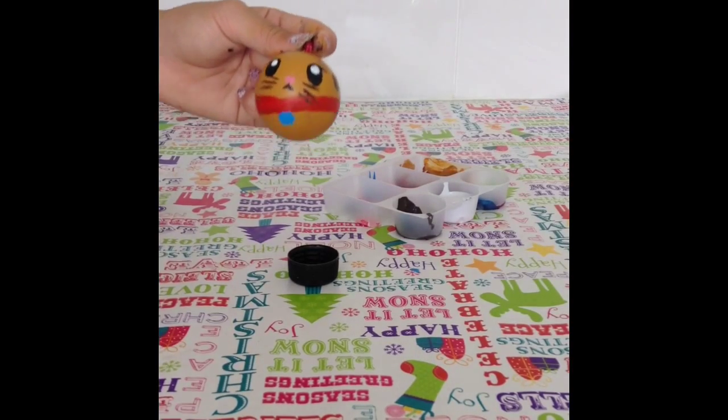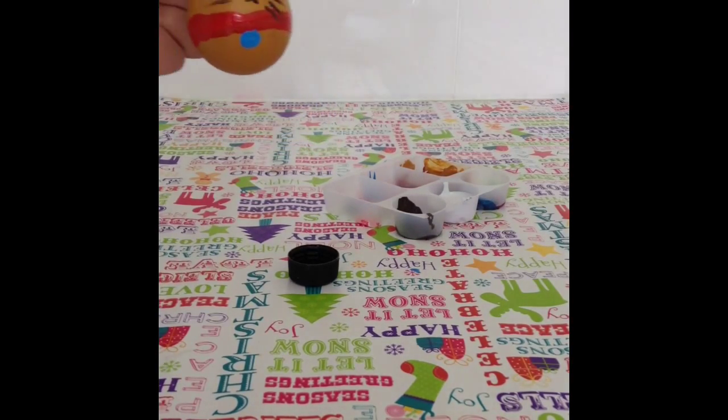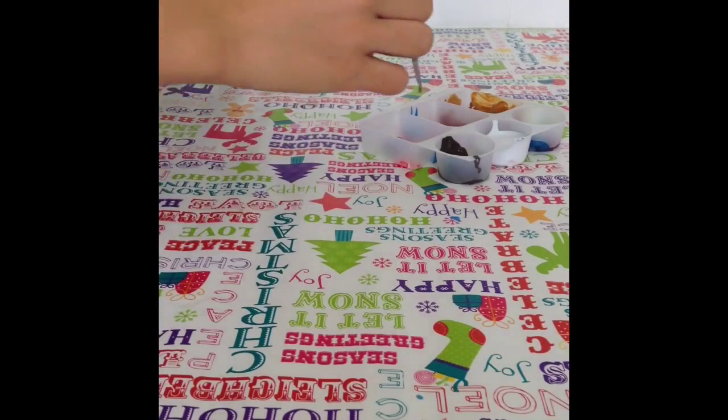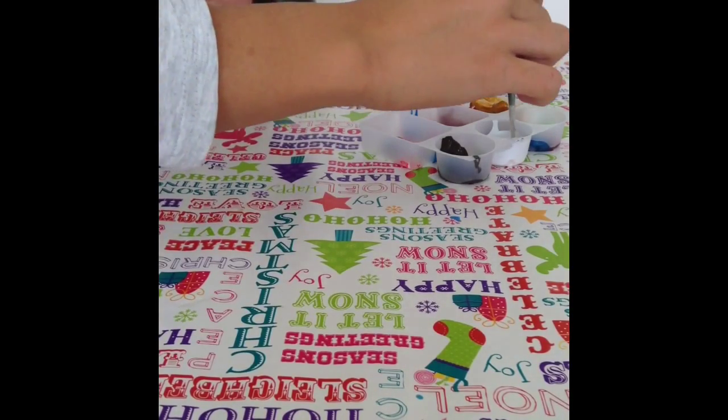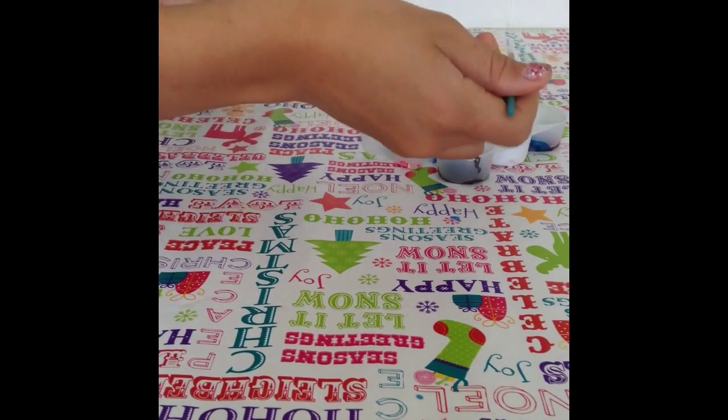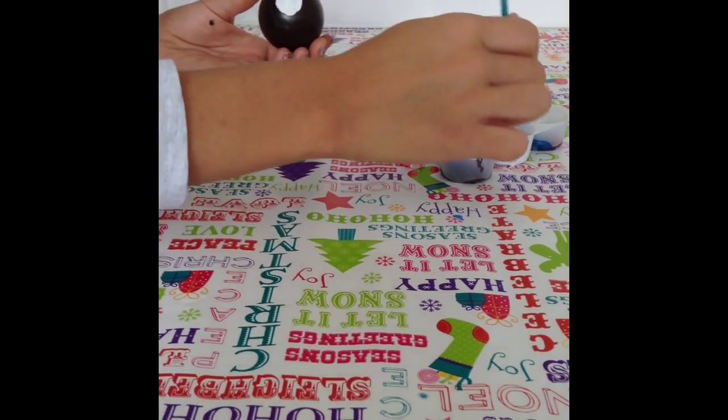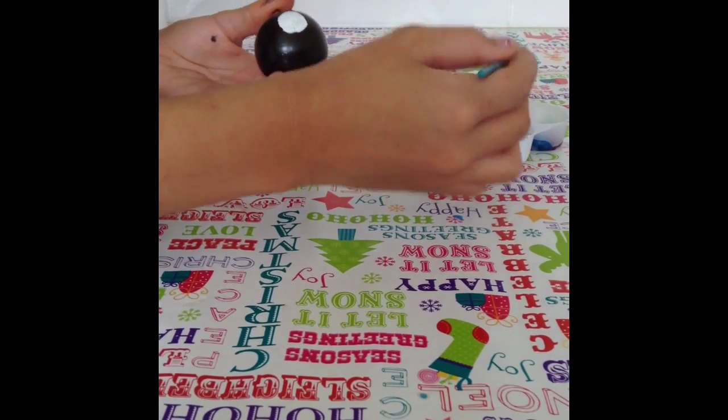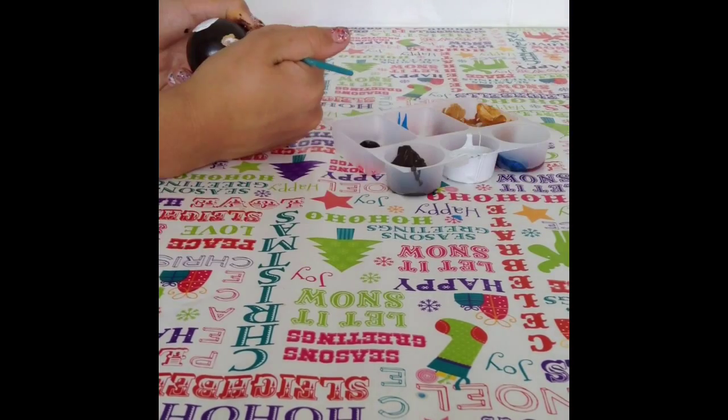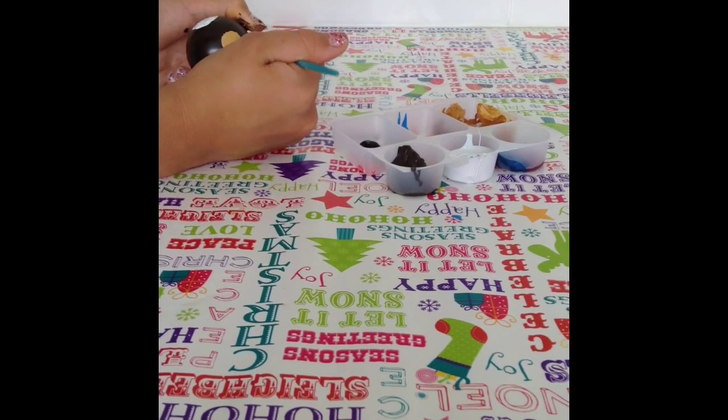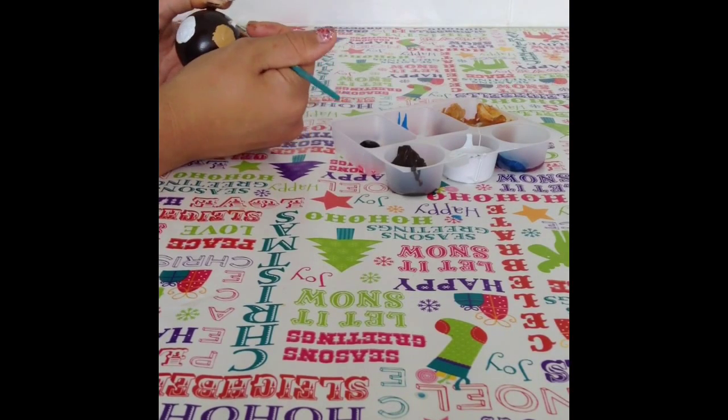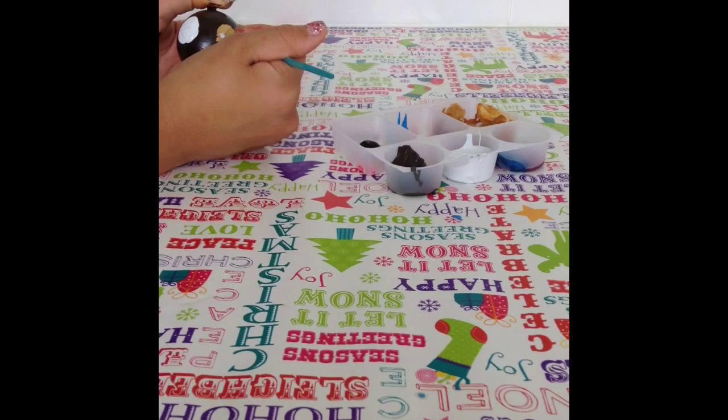And then you leave it to dry again. For the second one, I'm going to draw a white circle on one side and then on the other side I'm going to draw a light brown circle. This is going to be for the circles around the eyes, and then you put the eye in the middle.